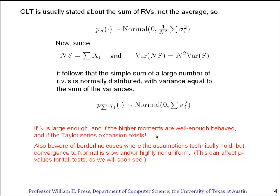In real life, you sometimes meet borderline cases where the assumptions hold technically, but when you're dealing with a finite sample of data, the convergence to normal is very slow or can be very highly non-uniform. For example, it can converge to something that looks like normal in the middle, in the bell-shaped region, but the tails can be very slow to converge. That's something to watch out for.